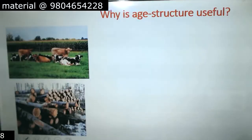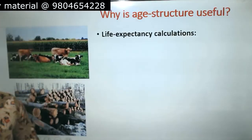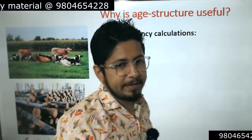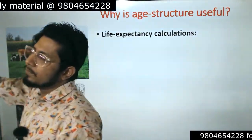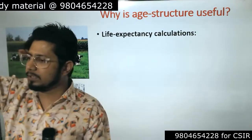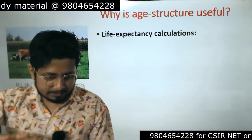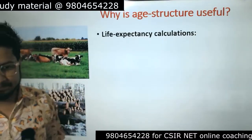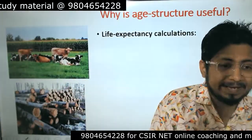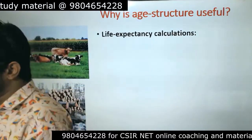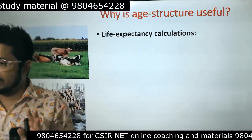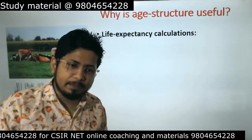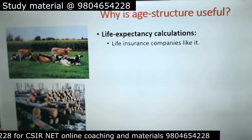Life tables are useful primarily for life expectancy calculations. From life tables we can calculate the life expectancy of organisms, because life tables give us an idea about the type of survivorship curve — whether Type 1, 2, or 3. Based on that we can comment on the organism: if it's Type 1, we know they are larger organisms that produce fewer offspring, provide more parental care, reach reproductive age later, and their offspring are also bigger in size.